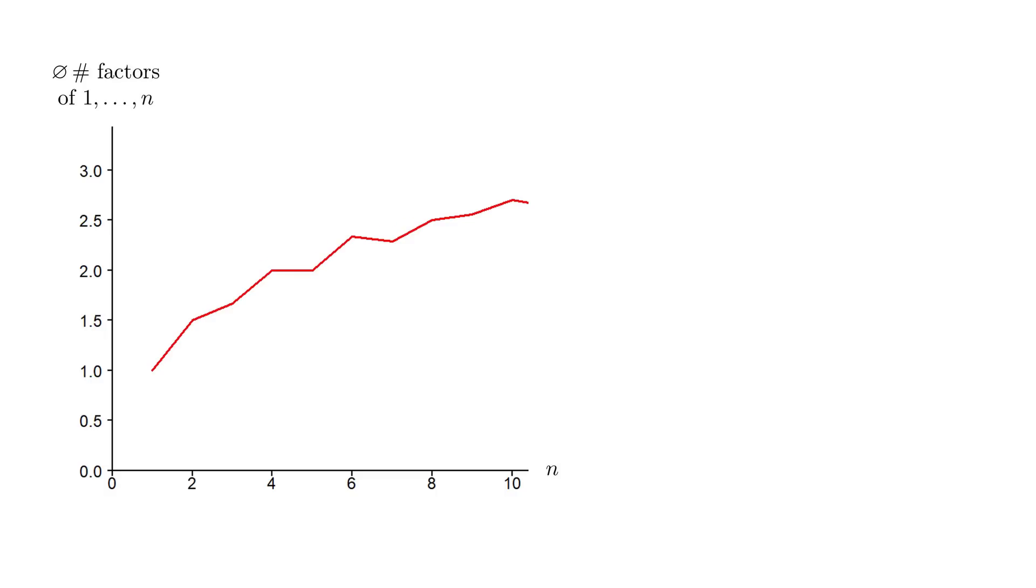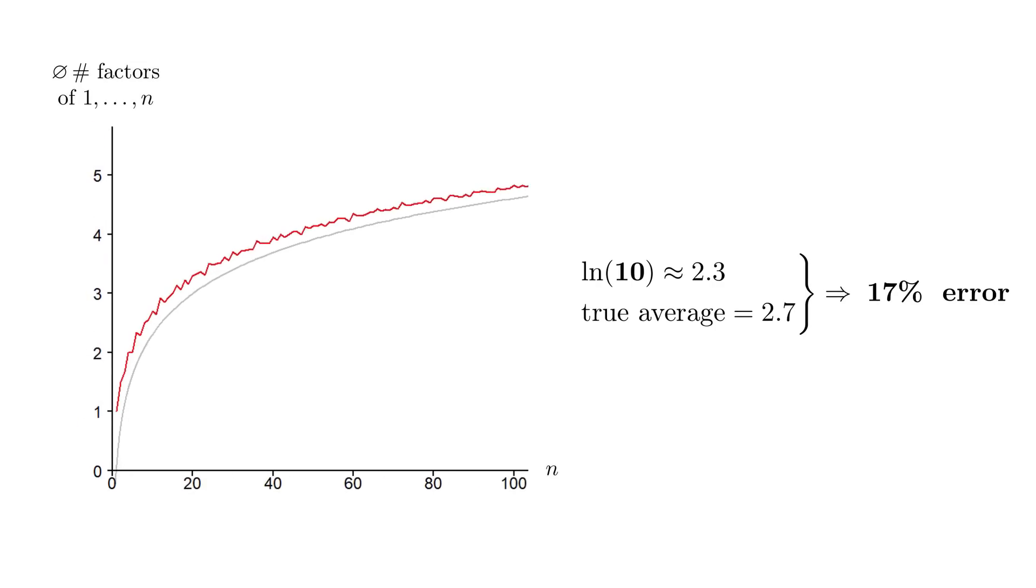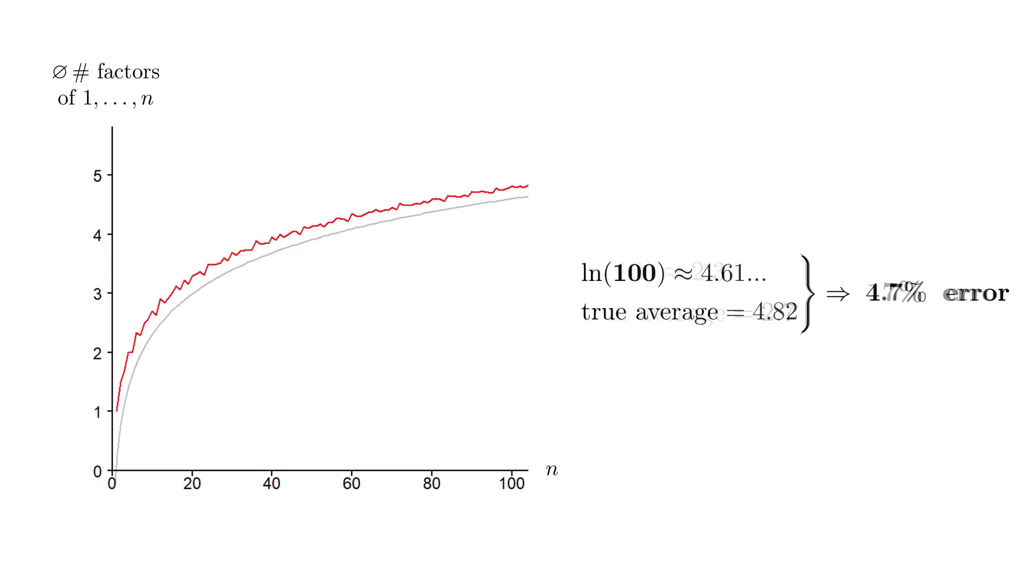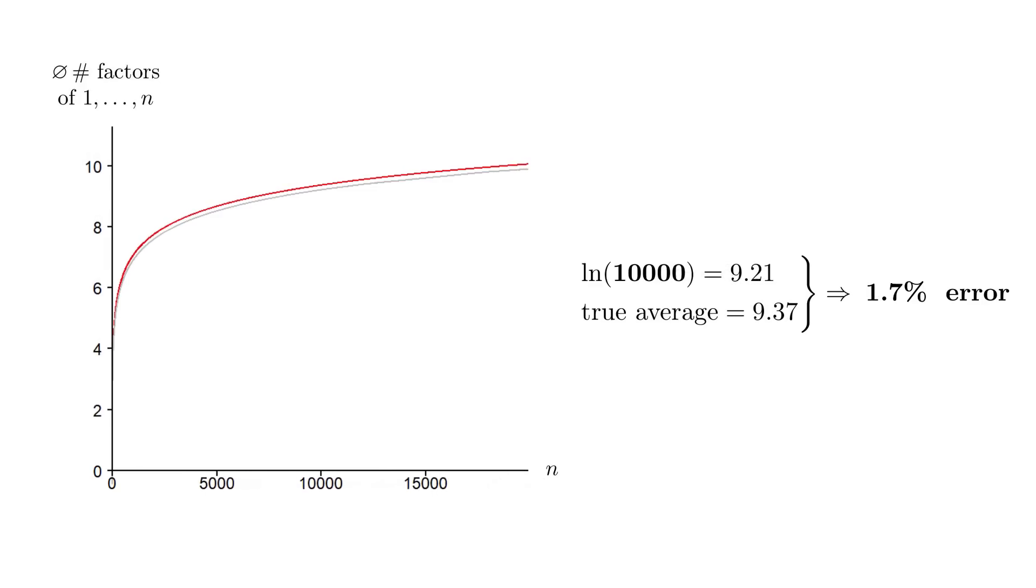One way to rephrase this result is that the graph of averages from before should be approximated by the logarithm, which as we saw is just the mirrored exponential function. As an example, we computed that the first 10 numbers have on average 2.7 factors, while log 10 is 2.3, so a relative error of 17%. The numbers from 1 to 100 have on average about 4.8 factors, resulting in a 5% error. But when considering n equals 10,000, the error is already 1.7% and tends to 0 as n increases. So what's the takeaway of this problem?